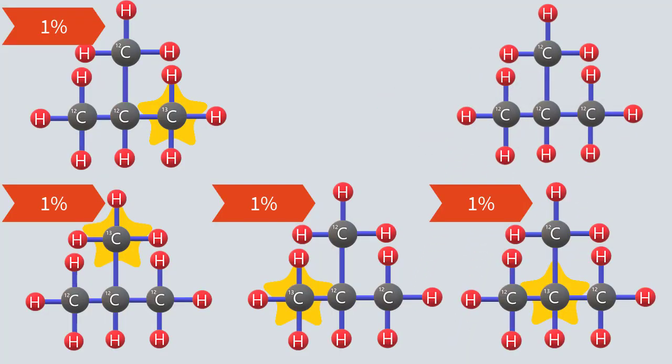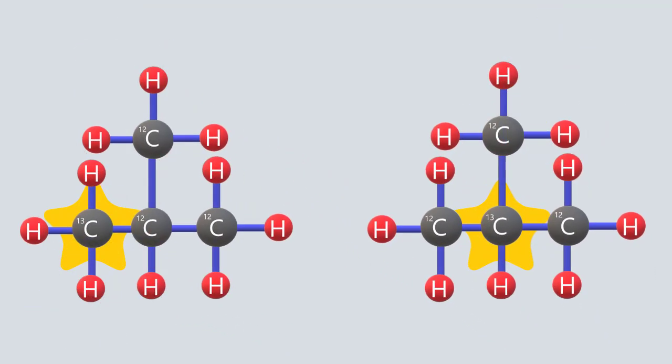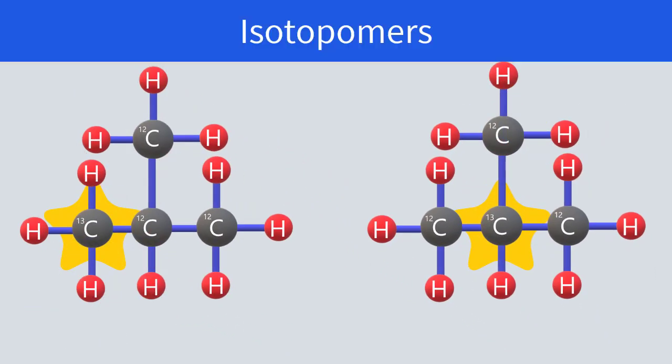Since all four carbon atoms have a 1% chance of being carbon-13, about 4% of isobutane molecules will be isotopologues of isobutane with one carbon-13. Three of these carbons are on the outside, so if a carbon-13 were in any of these positions, the molecule would look the same. There is also one central carbon, which could be carbon-13, so there are two possible isotopomers of the isobutane with one carbon-13.